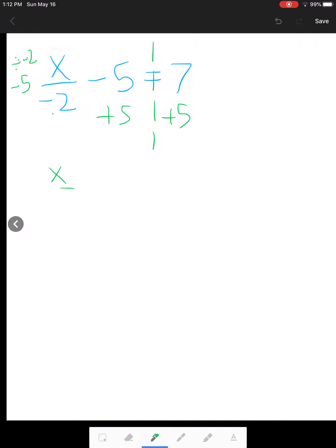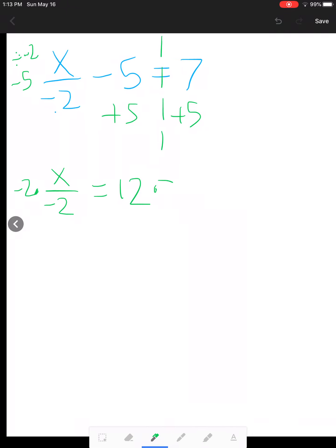Now, I have x over negative 2, or another way of thinking of this is x divided by negative 2, is equal to 12. Well, the opposite of dividing by negative 2 is going to be multiplying by negative 2. Multiply by negative 2. Do my mirror line. That's how I'm going to balance that out. These go away, and now I've isolated x. So x equals 12 times negative 2, which is negative 24. You can box that. Walk away.